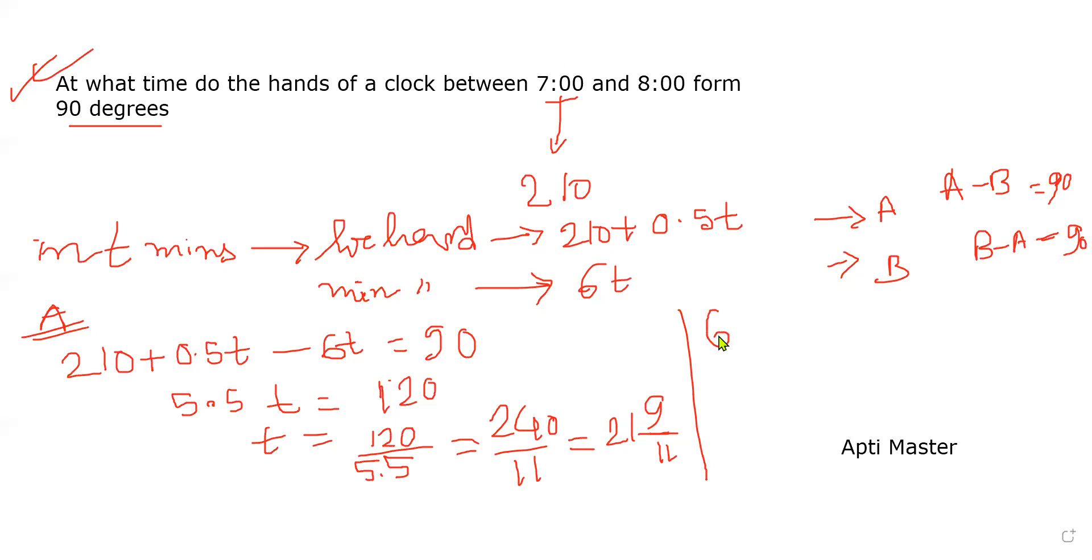So 21 and 9 by 11 minutes. So this is one. And second one is 6t minus 210 plus 0.5t, this will also be 90, so 5.5t will be 300.